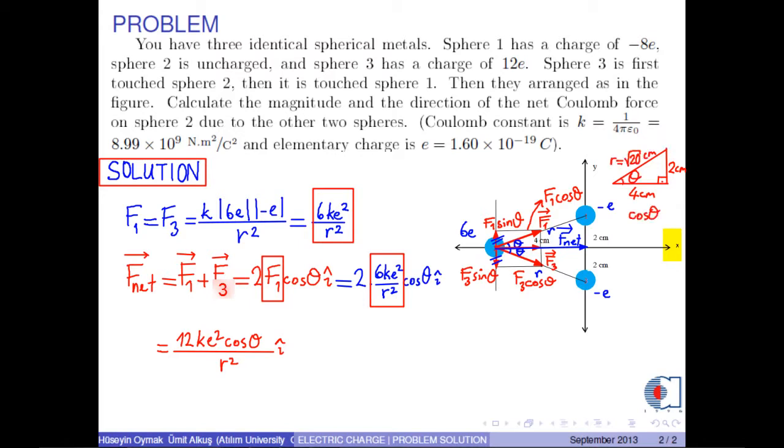And, again, from this figure, cosine theta is found to be 2 over square root of 20. Now, we can put the numerical values into this equation. The value of K, the value of e, the value of cosine theta, and the value of R.